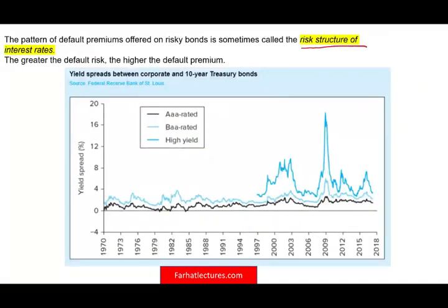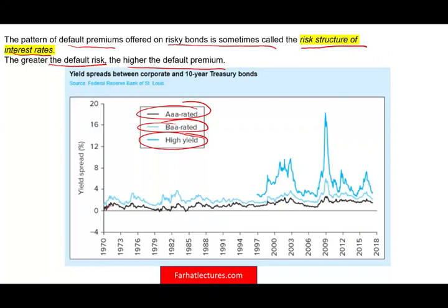The risk structure of interest rates refers to the pattern of default premiums offered on risky bonds. The greater the default risk, the higher the default premium. For example, triple-A bonds don't require much risk premium because they're already close to risk-free. But high yield bonds must offer a much higher yield spread, especially when economic conditions deteriorate, to attract investors.